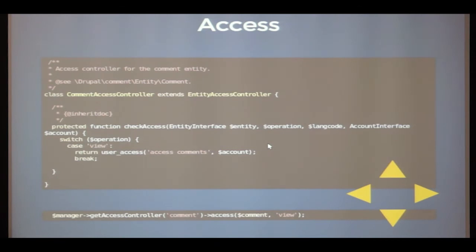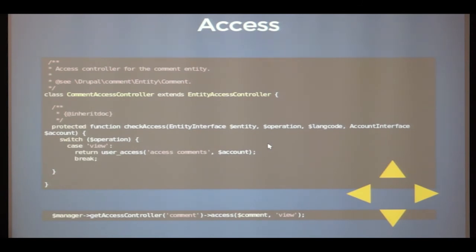Drupal 8 also has entity access support via access controllers, which wasn't there in Drupal 7 in this form. You have a base class with a check_access method you override to implement custom access checks. There's a unified API based on an interface — you get the access controller from the entity manager and call the access method to check view, edit access, or whatever operation on an entity.